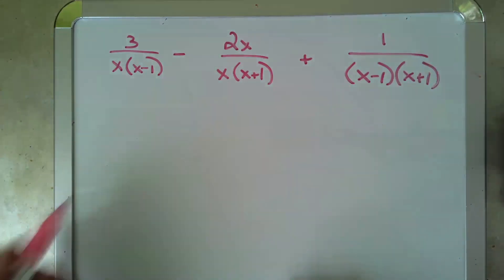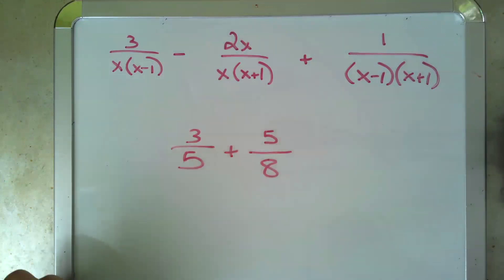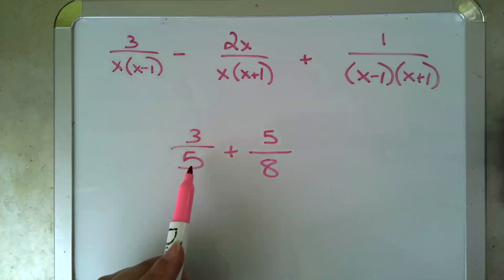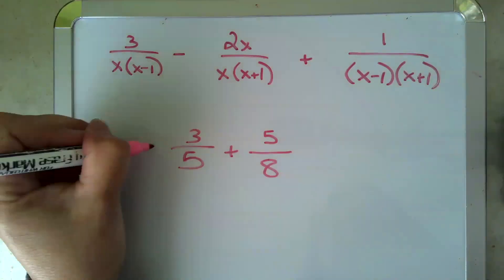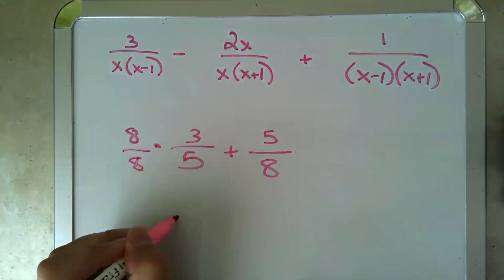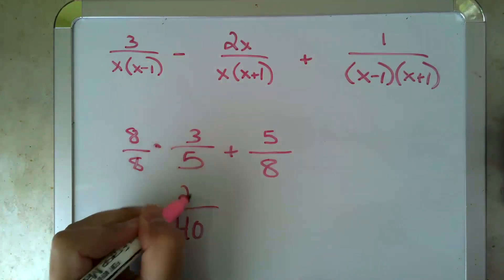If the problem instead said something like 3 over 5 plus 5 over 8, you would say, oh well, these have different denominators, so I need to make them the same denominator. So what's missing from this denominator is an 8, and so I would multiply this fraction by 8 over 8 to give me the common denominator of 40 and the new numerator of 24.